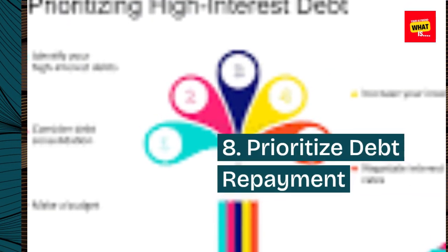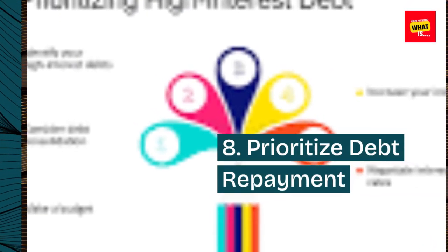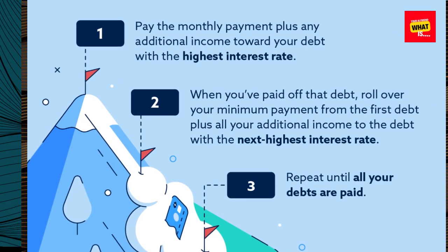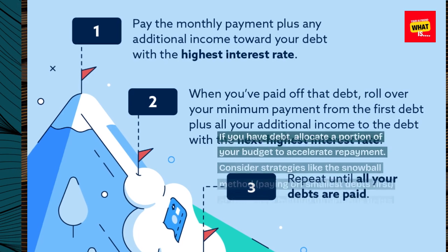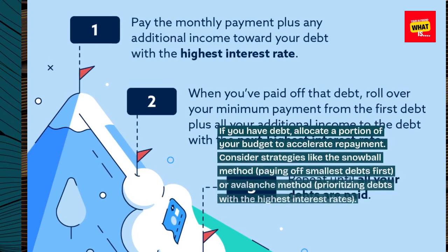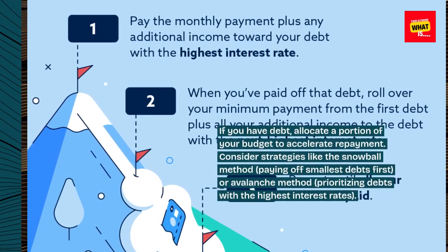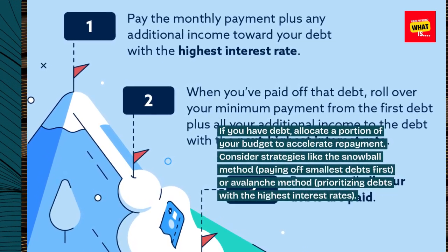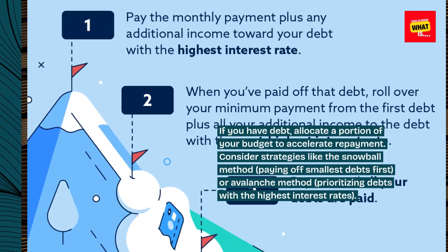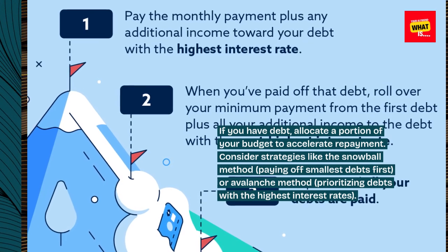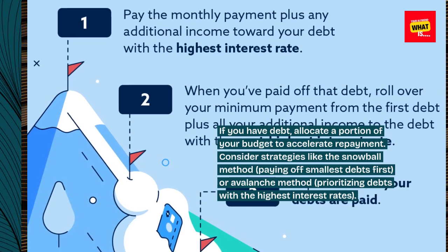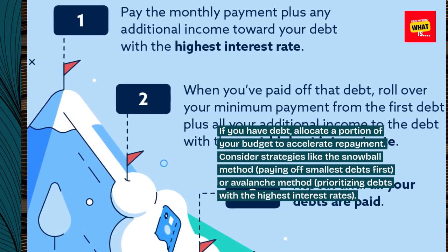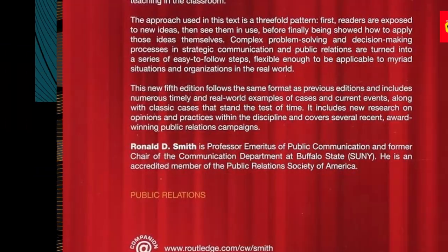8. Prioritize debt repayment. If you have debt, allocate a portion of your budget to accelerate repayment. Consider strategies like the snowball method, paying off smallest debts first, or the avalanche method, prioritizing debts with the highest interest rates.